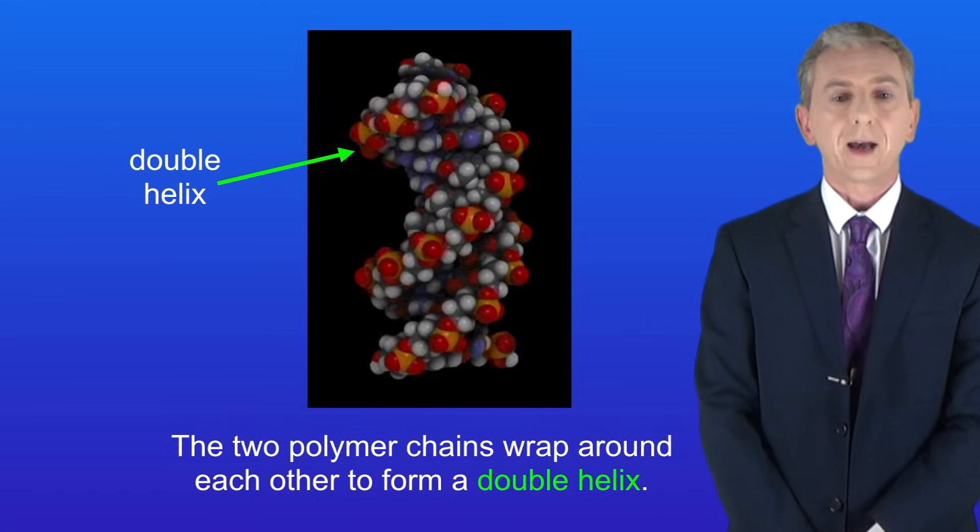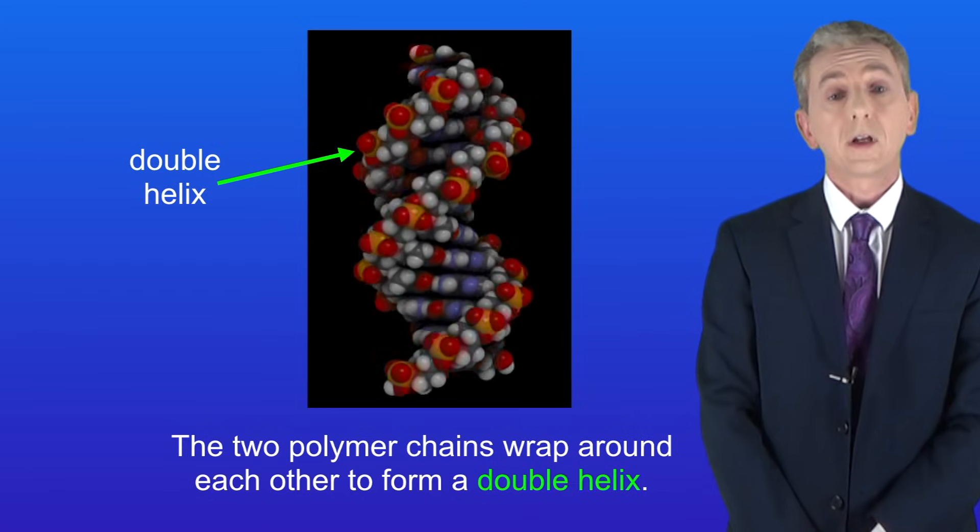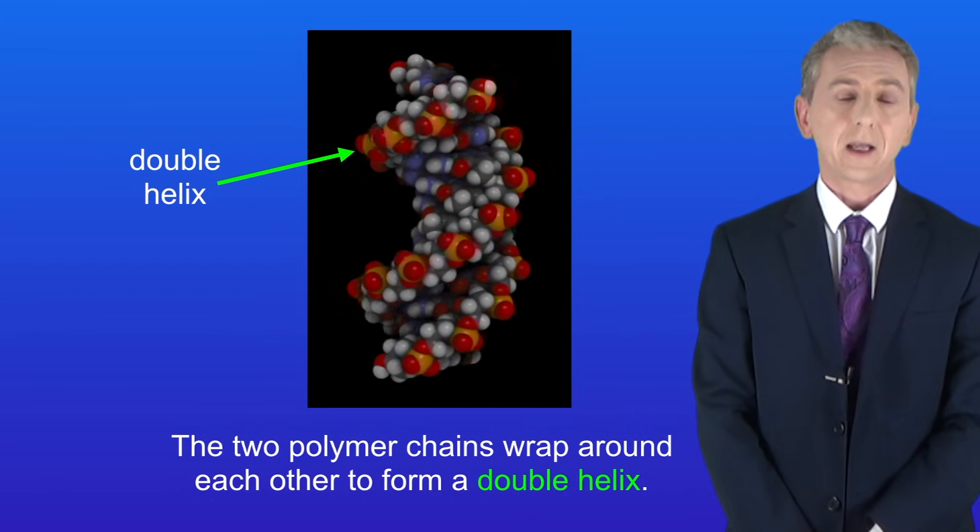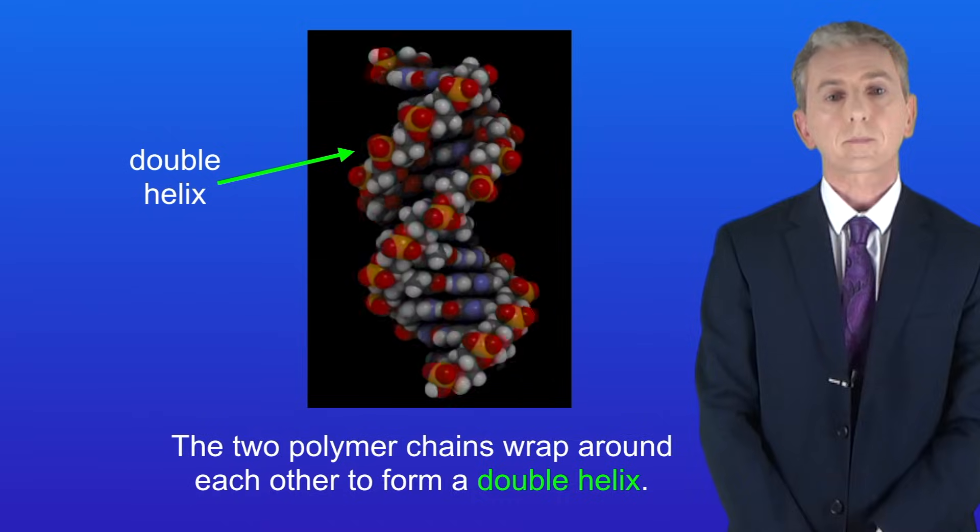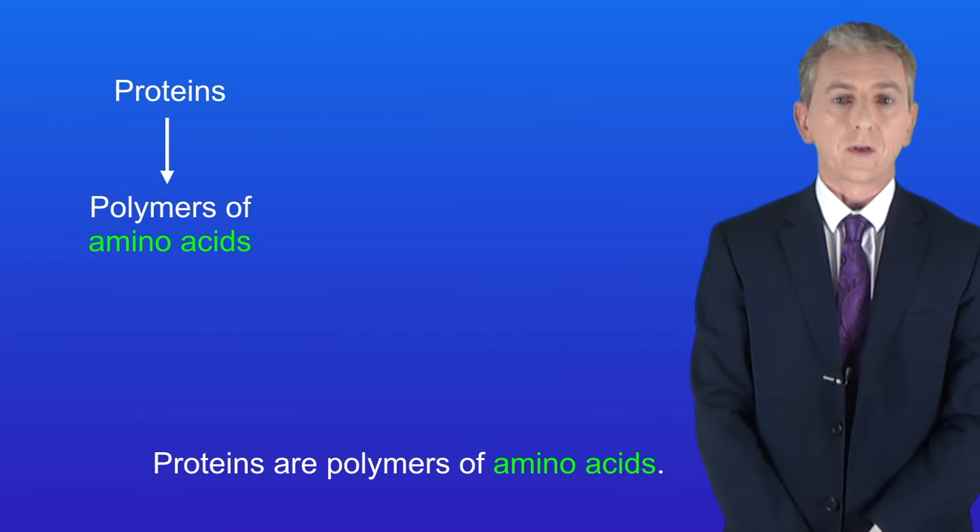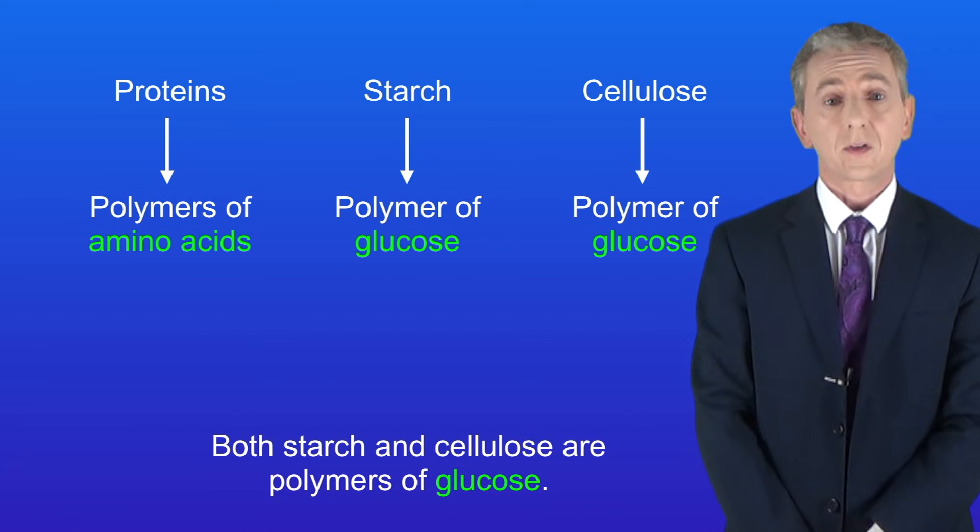We're going to finish now by looking at some other naturally occurring polymers. It's really important that you learn these. It's very likely that they'll be asked in your exam. As we saw in the last video, proteins are polymers of amino acids. Both starch and cellulose are polymers of glucose but in these two cases the glucose molecules are arranged in slightly different ways.